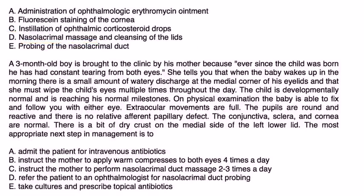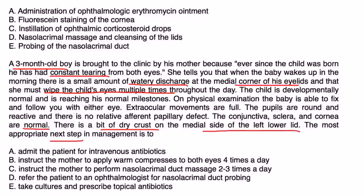Finally, a three-month-old boy is brought to the clinic by his mother because, ever since the child was born, he has had constant tearing from both his eyes. She tells you that when the baby wakes up in the morning, there is a small amount of watery discharge at the medial corner of his eyelids and that she must wipe the child's eyes multiple times throughout the day. The child is developing normally and is reaching his normal milestones. On physical exam, the baby is able to fix and follow you with either eye. Extraocular movements are full. Pupils are round and reactive. There's no relative afferent pupillary defect. Conjunctiva, sclera, cornea normal. There's a bit of dry crust on the medial side of the left lower lid. The most appropriate next step in management is...